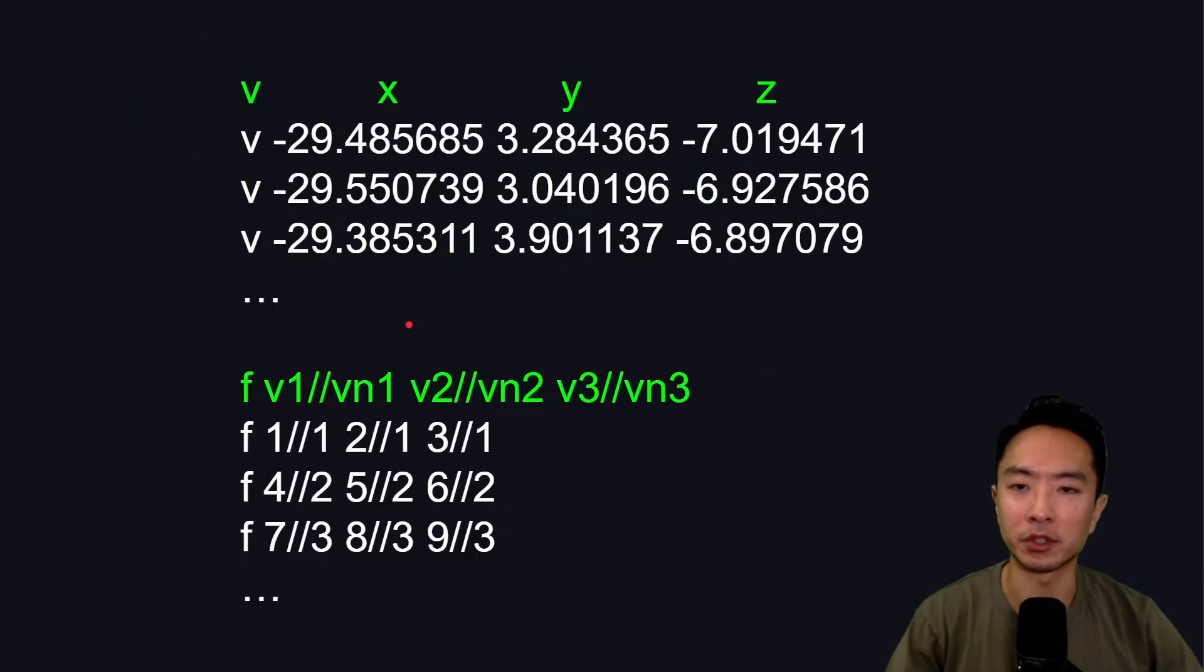A typical structure of an OBJ file, you're going to see something like this, where you're going to see V's as the first letter, and then followed by the X, Y, and Z values for each point. And then for the faces, it'll describe all the vertices that make up the face, and if there's a normal vector, it's going to say which indices represent the normal vector.